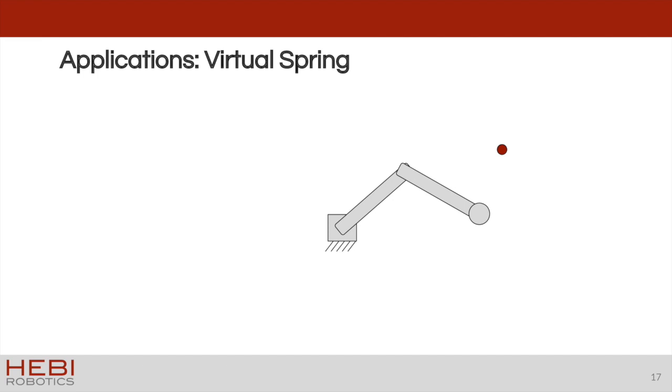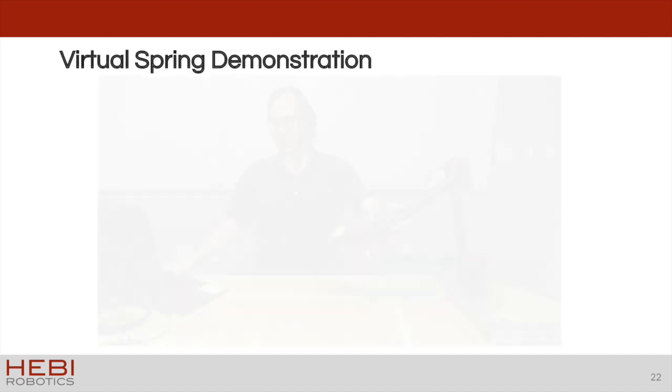Another demonstration using very similar techniques is the idea of a virtual spring. Suppose you want the tip of the arm to always be pulled towards a point in space. One method to achieve this is to apply forces to the robot as if pulled by an imaginary spring. To create this force, we consider the Jacobian in the frame of the end effector. We multiply its transpose by the desired force to obtain the required joint torques. In this video, we demonstrate the application of this virtual spring code.